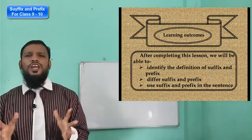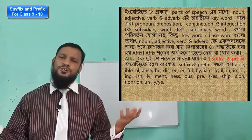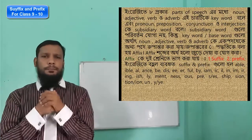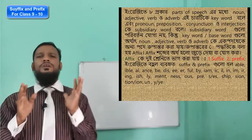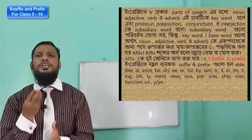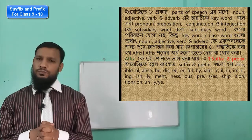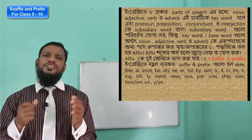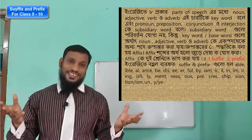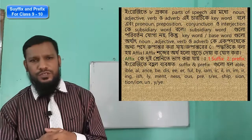You know that in English there are 8 kinds of parts of speech. Among them, noun, adjective, verb and adverb — these 4 are called key words. These are also called basic words. But pronoun, preposition, conjunction and interjection are called subsidiary words.